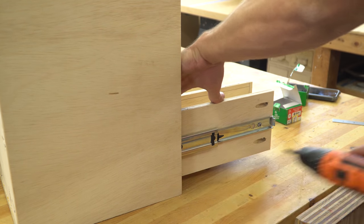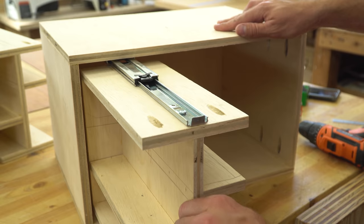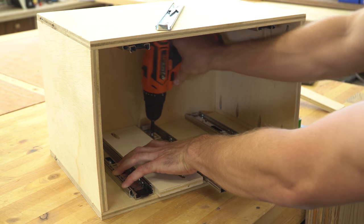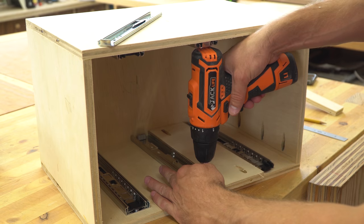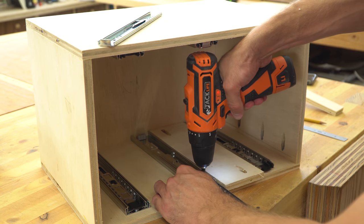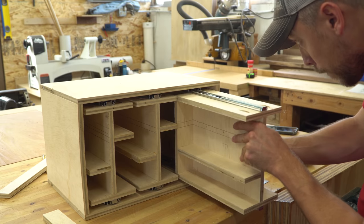If everything is spaced correctly, these screws will be directly in line with the center divider in the drawer. Mounting the rest of the slides follows the exact same procedure. I attached the slides on the opposite end first, then needed a new spacer piece to get the middle slides in the exact center of the box.